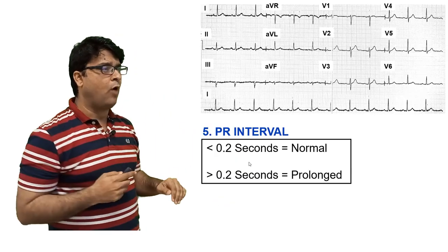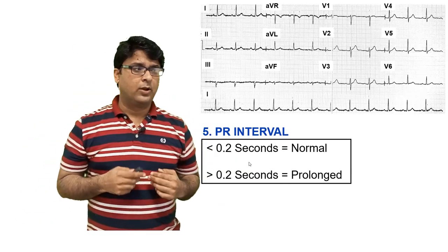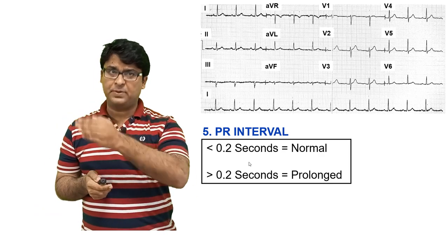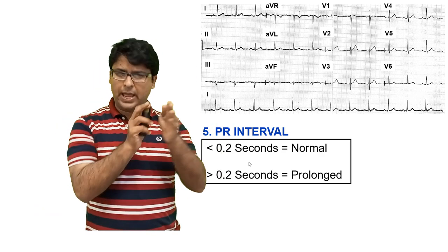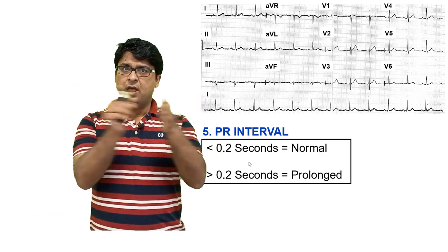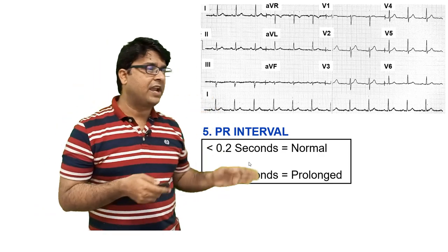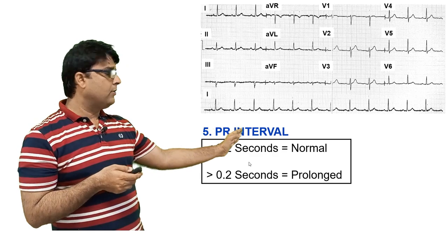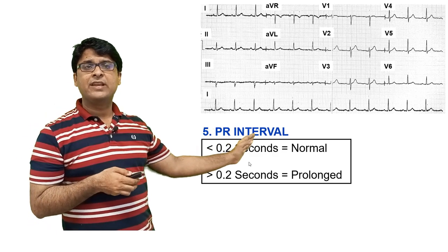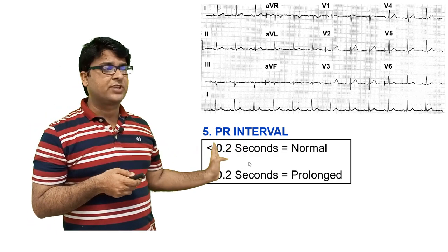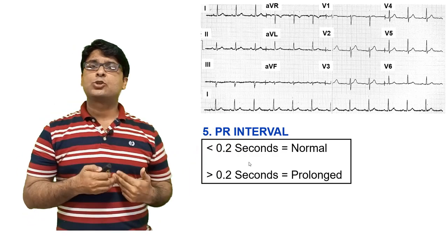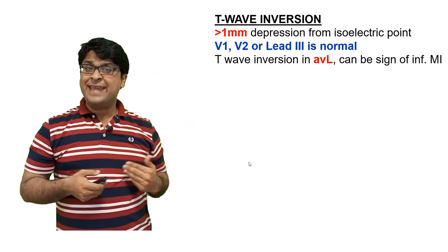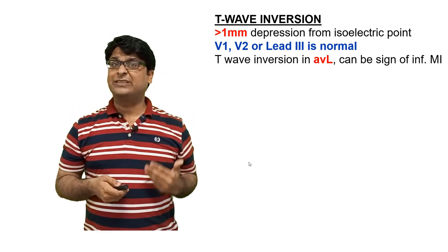Now look at the PR interval — from the P wave to the beginning of the Q wave. A normal PR interval is less than 0.2 seconds, and it is called prolonged if it is more than 0.2 seconds.